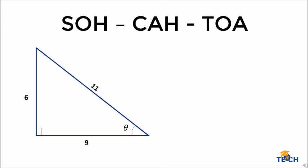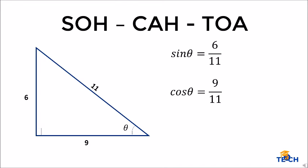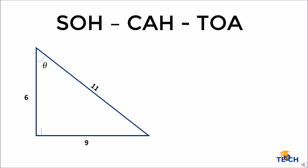Let us have an example. Let us determine the length ratio of each primary trigonometric function. Starting with the angle of interest below: sine theta is opposite over hypotenuse, which gives us 6 over 11. For cosine theta, adjacent over hypotenuse gives us 9 over 11.